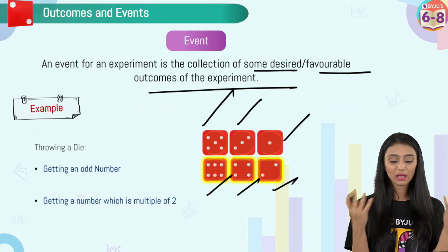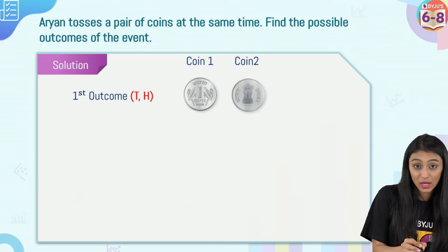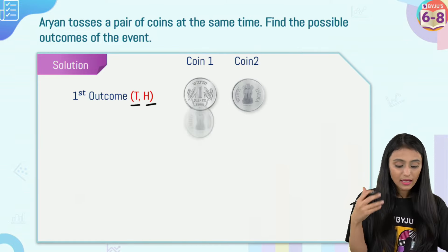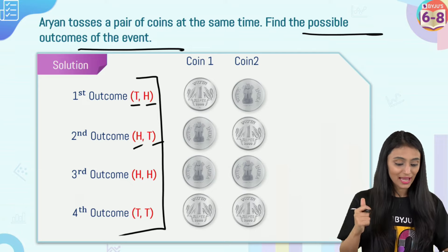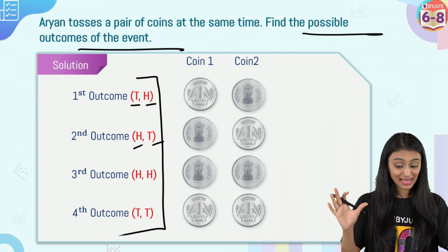Let's try a question: Aryan tosses a pair of coins at the same time — find all possible outcomes. If coin one and coin two are tossed together, the possibilities are: (T, H), (H, T), (H, H), and (T, T). We write them with a comma between values inside brackets. These are the four possible outcomes of the event.